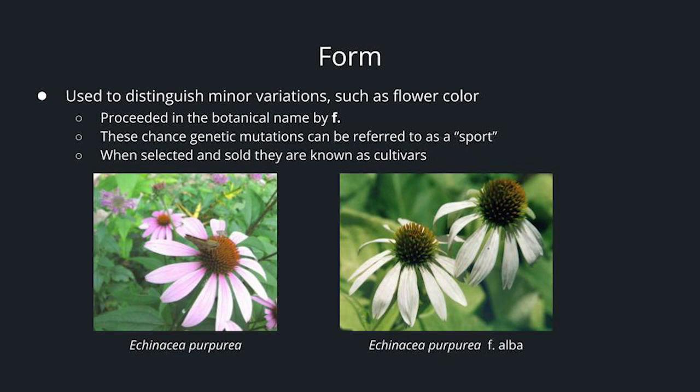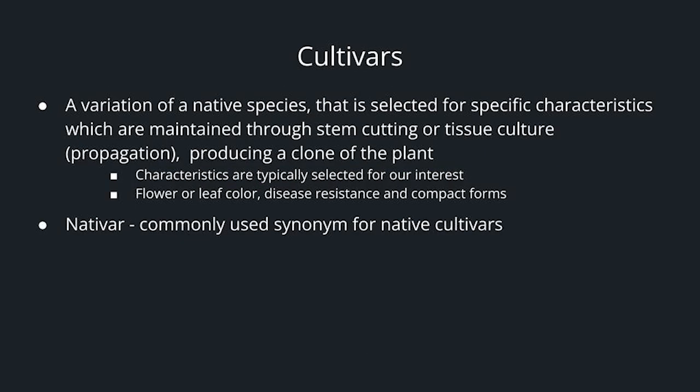Form is used to distinguish minor variations such as flower color, preceded in the botanical name with an F. These chance genetic mutations can be referred to as a sport, or when selected and sold, they are known as cultivars. So we have Echinacea purpurea, and the white form of that would be Echinacea purpurea forma alba. Cultivars are a variation of a native species selected for specific characteristics, which are maintained through stem cutting or tissue culture — a process known as propagation that essentially produces a clone of the plant.